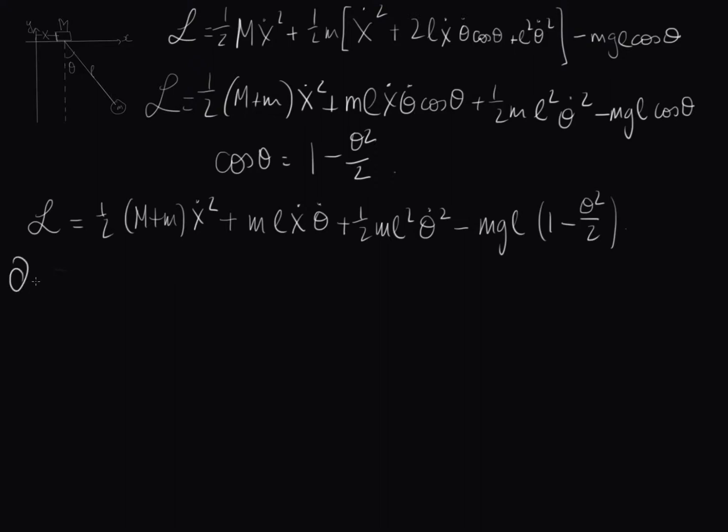So let's start off with our x's. So let's go DL dx. So you see here there's actually no x in this at all. Convenient. So we just have to write zero. So now if we write DL dx dot, not quite as simple unfortunately. We go, okay, well here's one. So this becomes M plus m x dot, and then here's another one, so plus ML theta dot, and then there's no more.